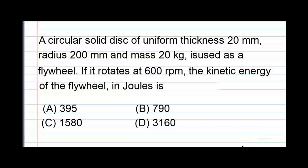A circular solid disk of uniform thickness 20 mm, radius 200 mm and mass 20 kg is used as a flywheel. If it rotates at 600 rpm, the kinetic energy of the wheel in joules is: